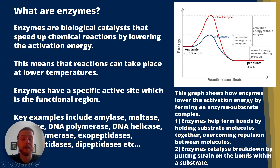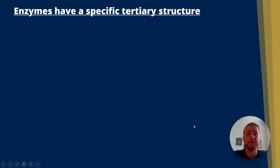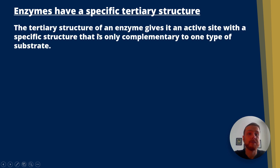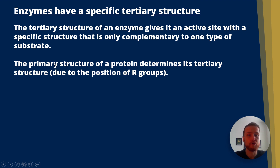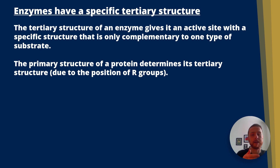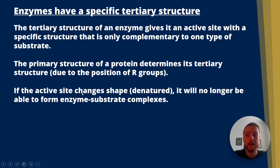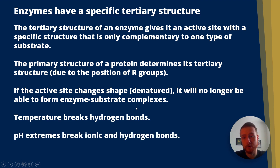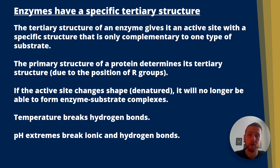Enzymes also catalyse breakdown by putting strain on the bonds within a substrate, reducing the energy required to break those bonds. Enzymes have a specific tertiary structure; the tertiary structure of an enzyme gives it an active site with a specific structure that is only complementary to one type of substrate. The primary structure of a protein determines its tertiary structure — amino acids have variable R groups, and different sequences of amino acids lead to R groups being in different positions. If the active site changes shape — meaning it's denatured — it will no longer be able to form enzyme-substrate complexes. Temperature breaks hydrogen bonds, and pH extremes break ionic and hydrogen bonds.